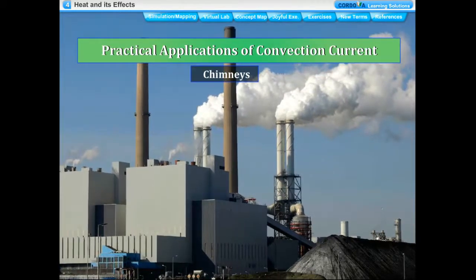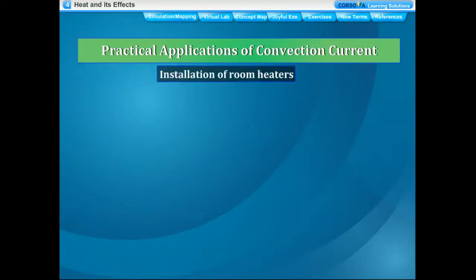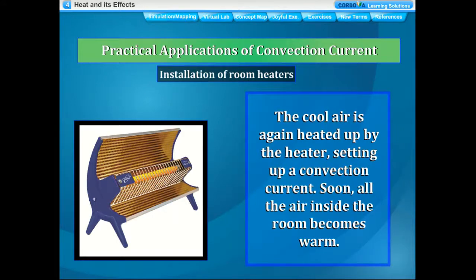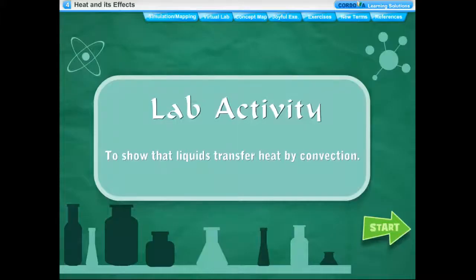It is advisable to place room heaters at ground level for effective heating. The warm air near the heater rises up, and cool air from other areas rushes in to fill its space; the cool air is again heated by the heater, setting up a convection current, and soon all the air inside the room becomes warm.